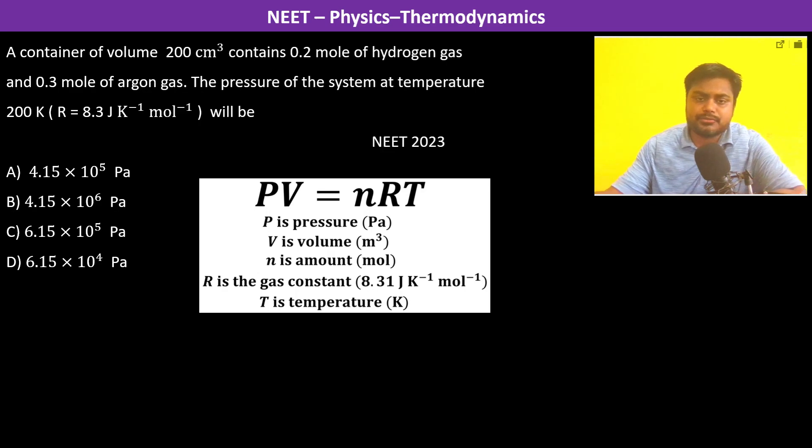Here we have to use PV equals nRT. The pressure we don't know, let it be P. The volume is 200 centimeter cube, so this will be 200 into 10 to the power minus 6 meter cube.